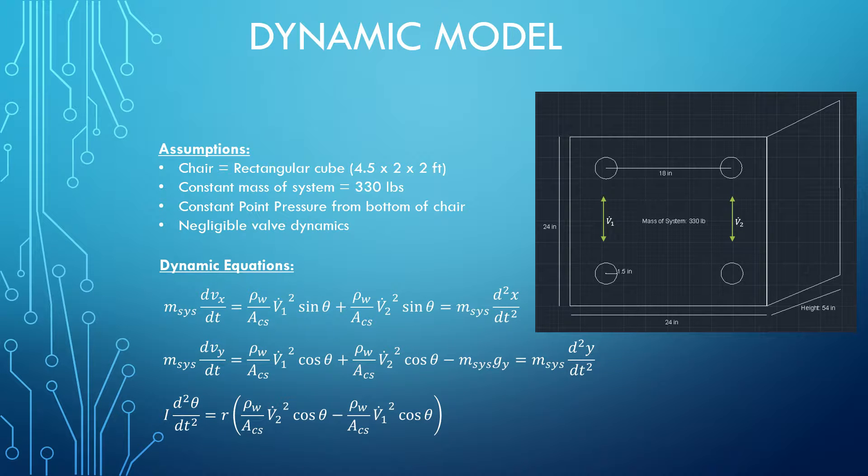Due to the inherent non-linear nature of our system, as we can see we have v-squared terms and thetas, we were unable to just linearize the system and do a general first order approximation. We needed to model this system dynamically.